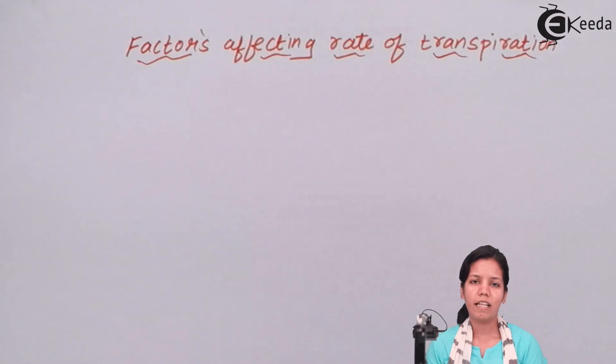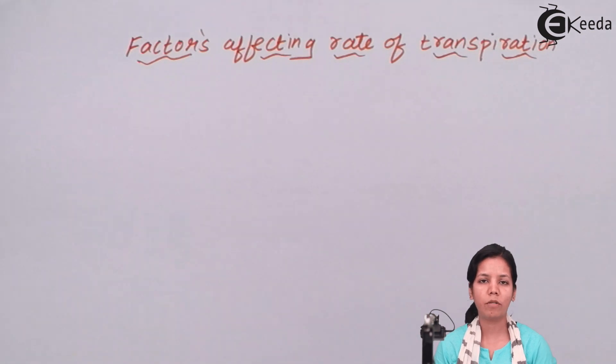Transpiration is nothing but loss of water from upper surface of leaf, precisely from the stomata. Transpiration is an important process that takes place inside each and every plant cell.